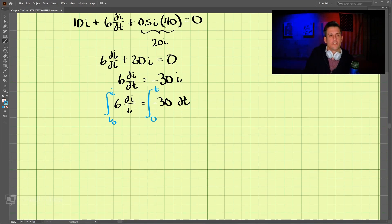So if we do that, let's keep going. On this side we have 6 times the natural log of I over I₀, and then the right-hand side here, we have negative 30t.